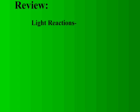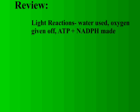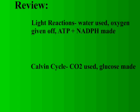However, it is important to remember what happens in each step. Let's review. In the light reactions, water is used, oxygen is given off as a waste, and ATP and NADPH are produced. In the Calvin Cycle, carbon dioxide is used and glucose is produced.